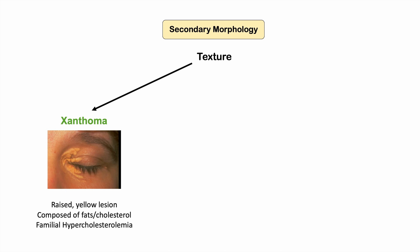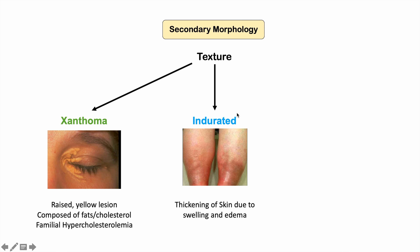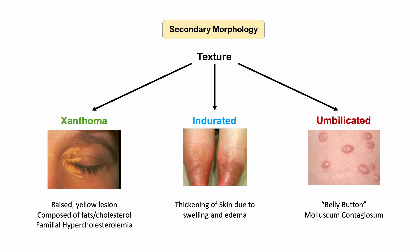Xanthomas are raised yellow lesions, usually seen around the eyes, composed of fats and cholesterol, associated with familial hypercholesterolemia. Indurated refers to thickening of the skin due to swelling and edema. Umbilicated lesions have a small central indent — like a belly button — as seen in molluscum contagiosum, where the lesion is raised but has that central depression.